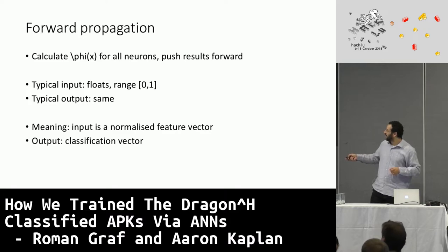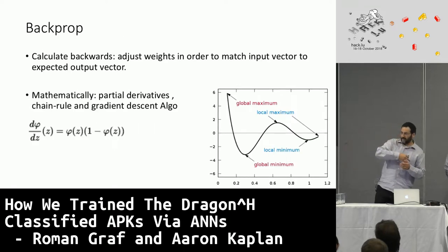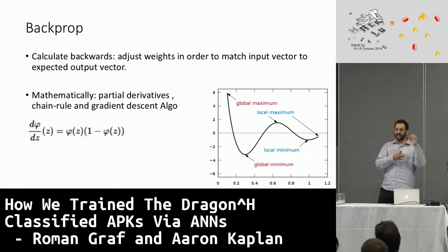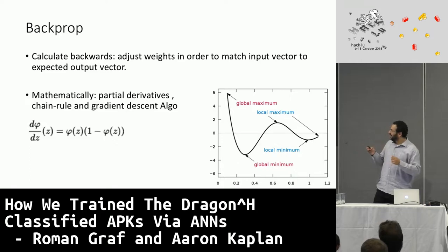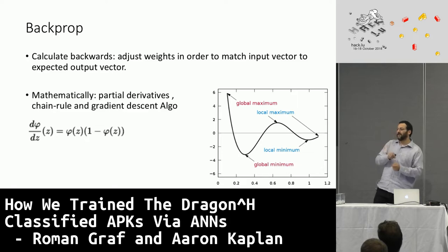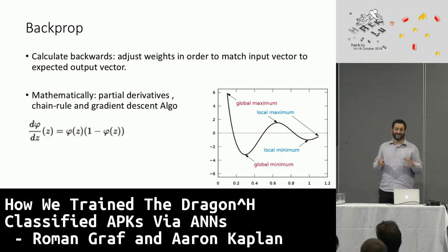Inputs are vectors and outputs are again vectors — let's say a classification vector. Backprop does the opposite: it calculates the weights. The weights are usually initialized with a random initial value, and then the network learns by adjusting the weights over time with known input and known output. That's supervised learning — we know the input, we know the output, and we adjust the weights. That's backpropagation.